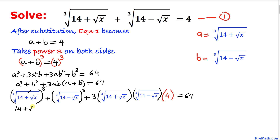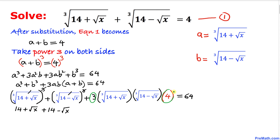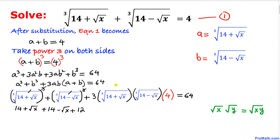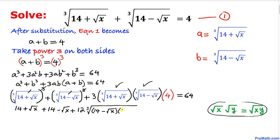Plus 3 times 4, which I'll write as plus 12, equals 64. Now we simplify the two radicals when we multiply them. Using the product rule, I can write the cube root of (14 plus square root of x) times (14 minus square root of x) under the same radical. The right hand side remains 64.